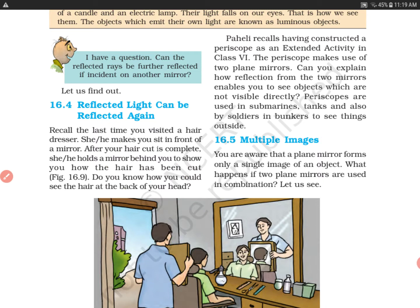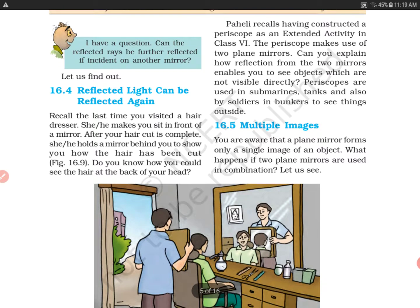You will have seen this many times in salons when people get their hair cut. As you can see in the picture, this girl's hairstyle at the back will be shown in the mirror. One mirror reflects to another mirror, meaning reflected light can be reflected again.